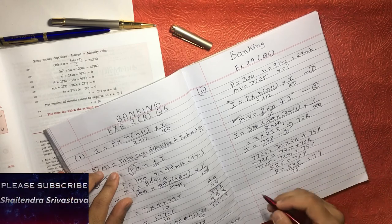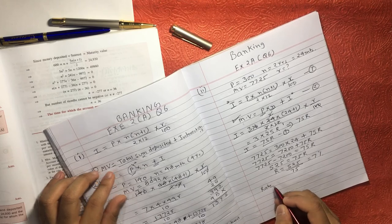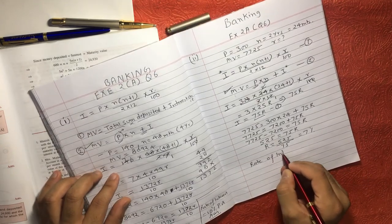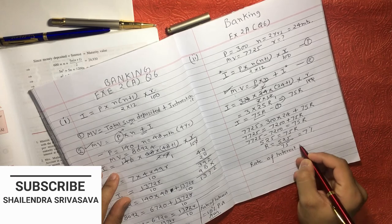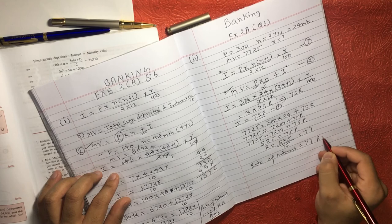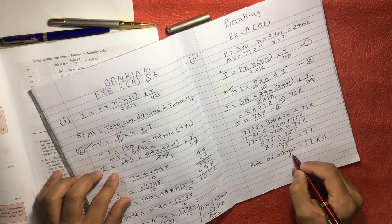So we can say rate of interest is equal to 7 percent per annum and that is your answer.